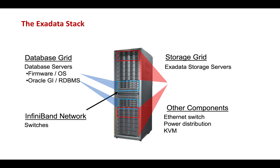The third component is the network, which is the IB network or the InfiniBand network, comprised of three switches — one spine switch and two leaf switches. We also have other components like the Ethernet switch, the power distribution units also called PDUs, and the KVMs which are the keyboard, video, mouse. Let's take a look into each of these components.